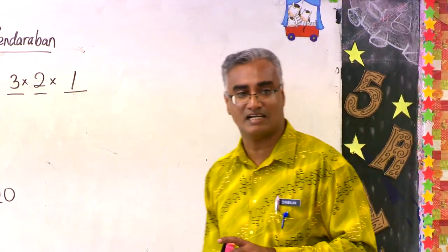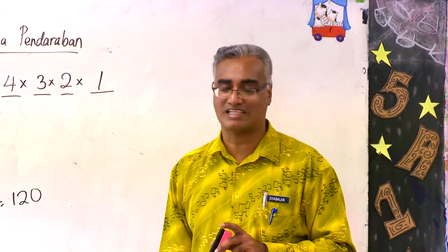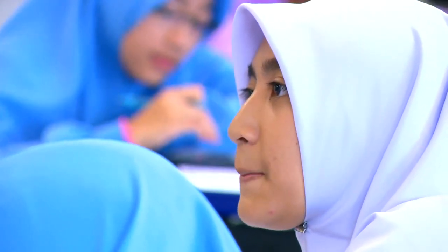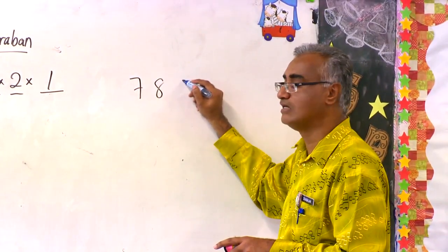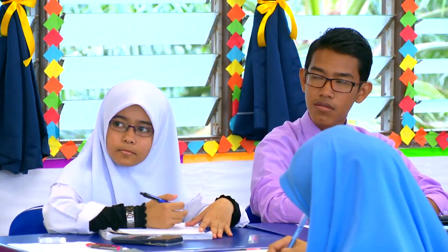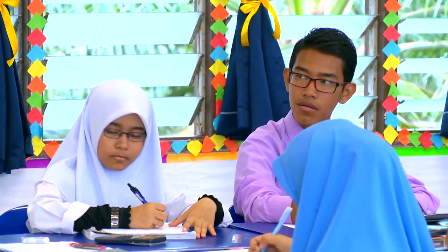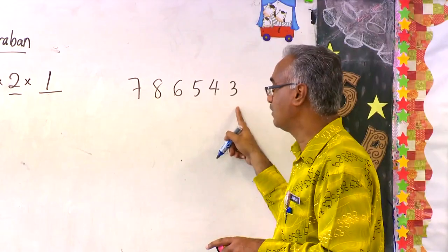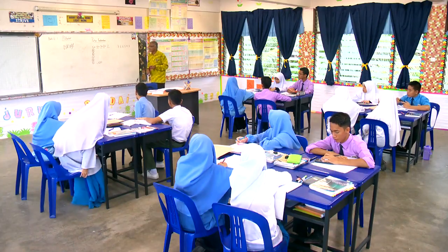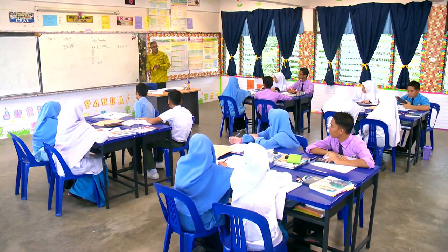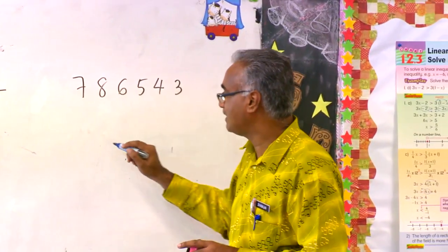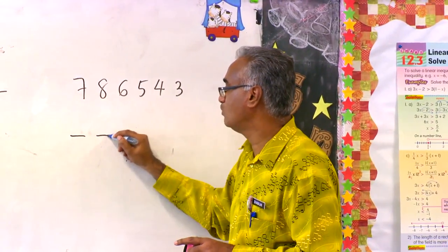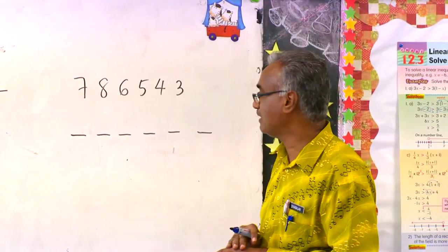Katalah saya sekarang nak buat 6 huruf atau 6 digit. Ifah, berikan satu nombor 6 digit. Nombor yang diberikan ialah 7, 8, 6, 5, 4, 3. Saya nak menyusun 6 digit ini tanpa syarat. Berapa petak saya perlu buat? 6 petak.